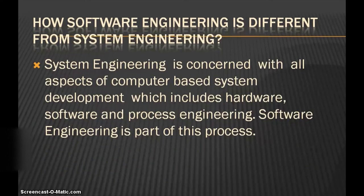How is software engineering different from system engineering? System engineering is concerned with all aspects of computer-based system development, which includes hardware, software and process engineering. Software engineering is a part of this process, so we can say software engineering is a part of system engineering.